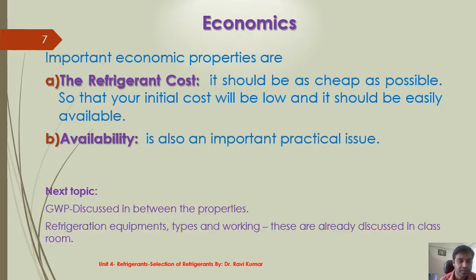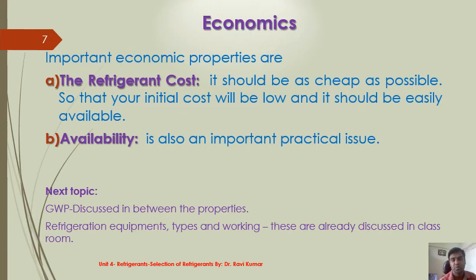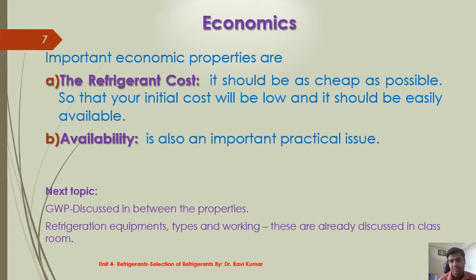The next topic is global warming potential, which I discussed during the second property category. The next topic according to the syllabus is refrigeration equipment types and working — that is, the various refrigeration equipment such as condenser, compressor, and evaporators — which has already been discussed in previous units in the classroom. If anyone has any problem, they can send a message and discuss on Google Classroom.